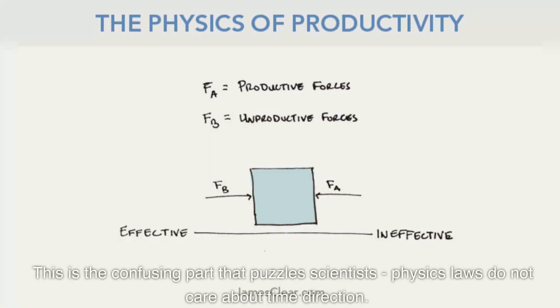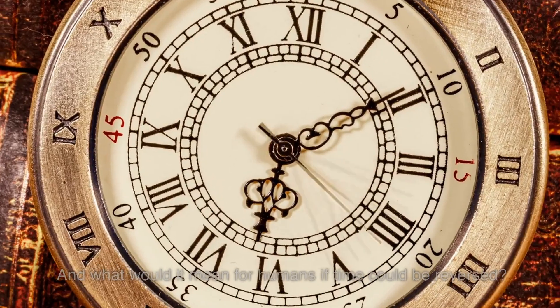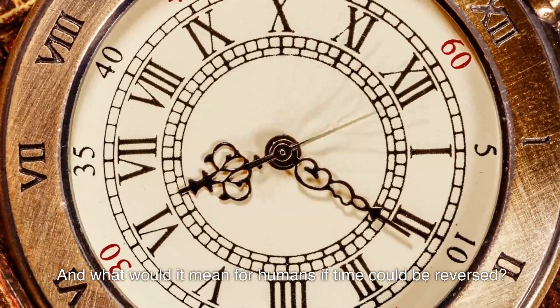This is the confusing part that puzzles scientists: physics laws do not care about time direction. So can time travel backward, and what would it mean for humans if time could be reversed?